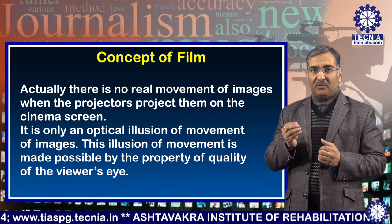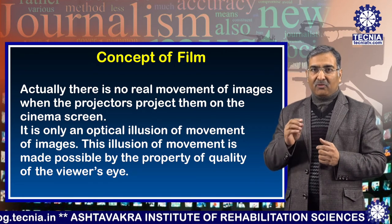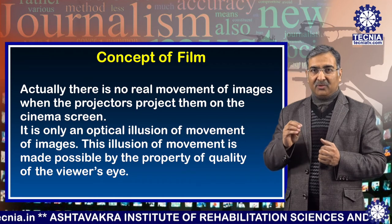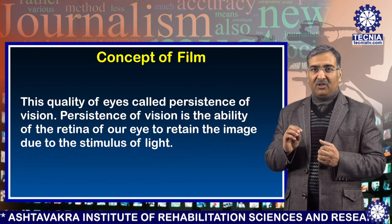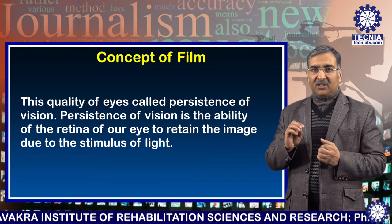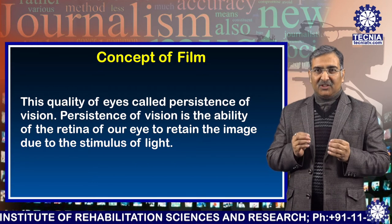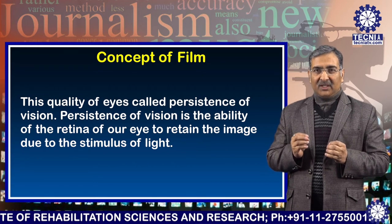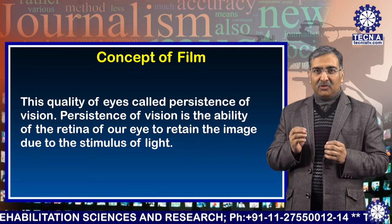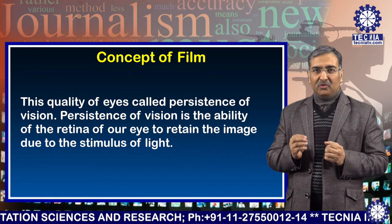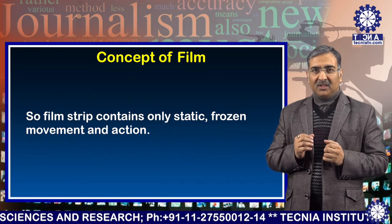This illusion of movement is made possible by the property or quality of the viewer's eye. This quality of eye is called persistence of vision. Persistence of vision is the ability of the retina of our eye to retain the image due to the stimulus of light.